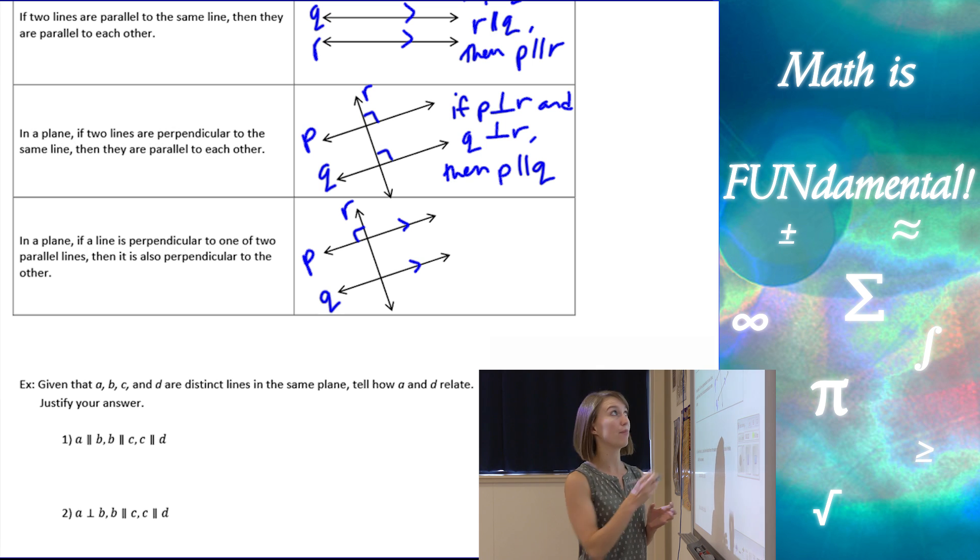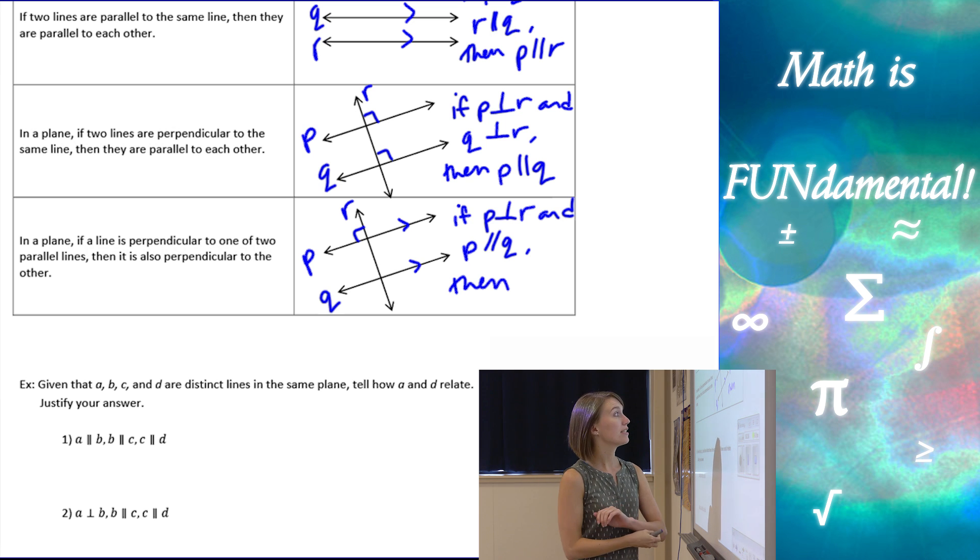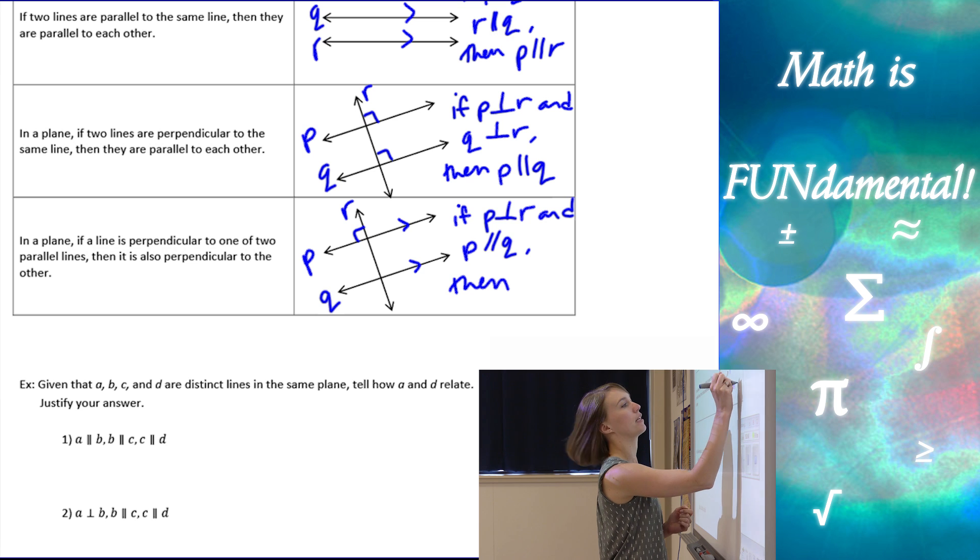So, if R is perpendicular to P and P is parallel to Q. So, that's our setup here. So, if P is perpendicular to R and P is parallel to Q, then, well, what can we say about Q and R? Well, Q and R have to be perpendicular. So, Q perpendicular to R.